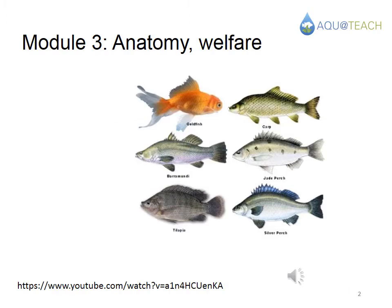One of the first stages in any anatomy course is to learn some basic vocabulary. This will help you to carry out your aquaponics project correctly and will probably be useful in life in general, especially if you want to buy and eat some quality fish. There are four main sections to this module: external anatomy, internal anatomy, respiration physiology, and fish welfare.